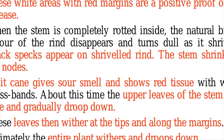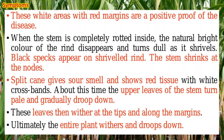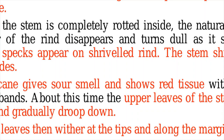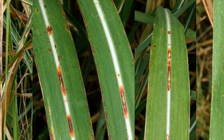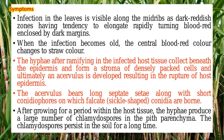The upper leaves turn pale and gradually droop down. The leaves wither and the tips along the margin bend and droop down, and finally the entire plant withers and dies. The acervuli appear on the midrib — dark red in color in the center with red margins. The hyphae produced by germination of conidia spread inside and ramify throughout the host tissue. Just beneath the epidermis they form a stroma of dark cells, and ultimately an acervulus develops, resulting in the rupture of the epidermis.